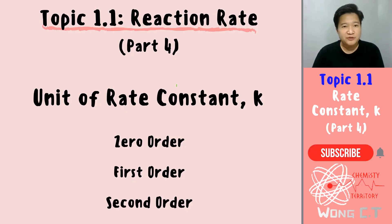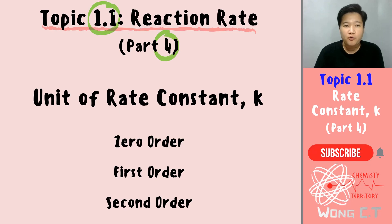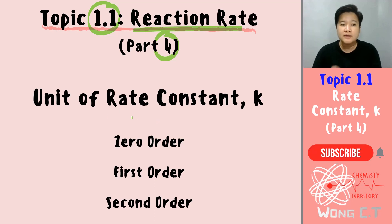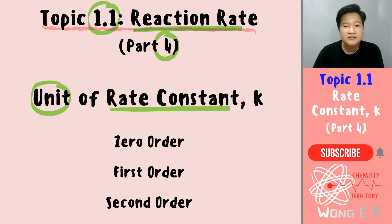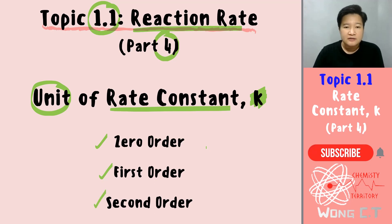Hi guys, welcome back to Wong Chemistry channel. This video is Part 4 of Topic 1.1 Reaction Rate. In this video we are going to talk about only one thing: we are going to discuss the unit of our rate constant k. We are focused on the zero order, the first order, and the second order, knowing that the rate constant will have a different unit for different orders.